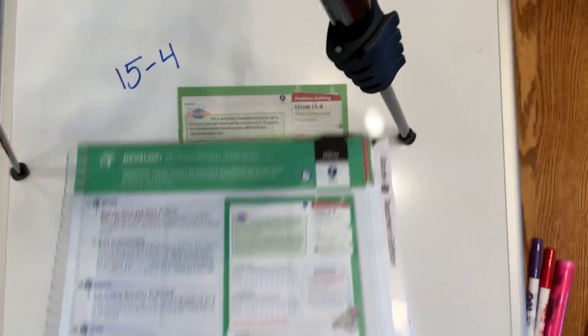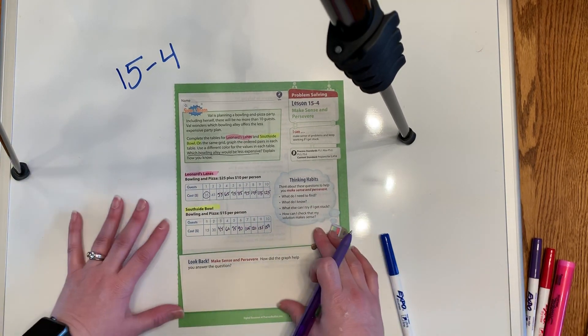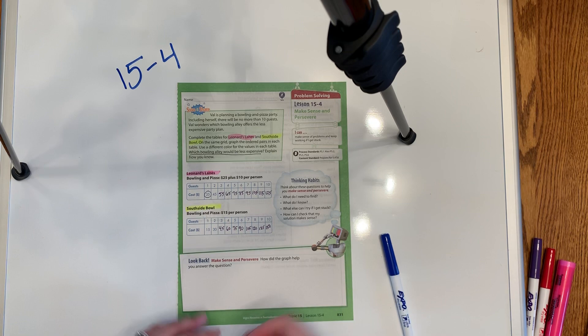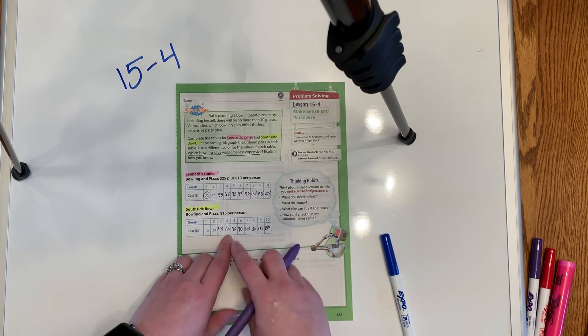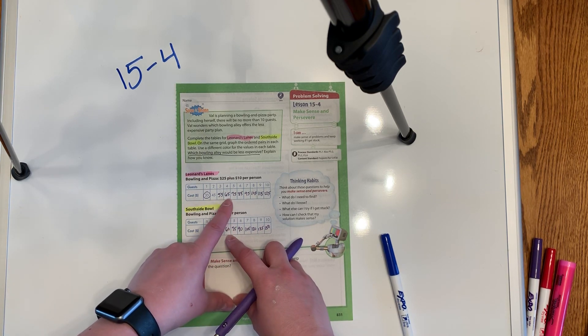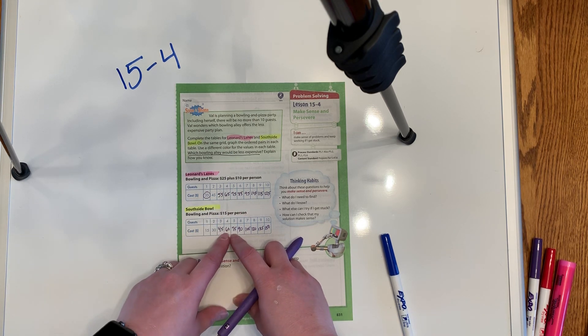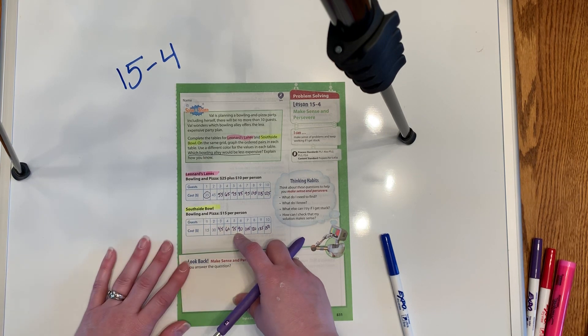And so I guess what she could do is if some of her friends, let's say maybe there's like a global pandemic or something, and you can't actually have the party with as many people as you were thinking. Sorry, that's a little COVID humor for you. You know, if you had four people, up to four people, actually up to five people, they're the same. At five people, they're the same. But for less than five people, it would be cheaper to go with the South Side Bowl. So that would be another way that you could make your decision.